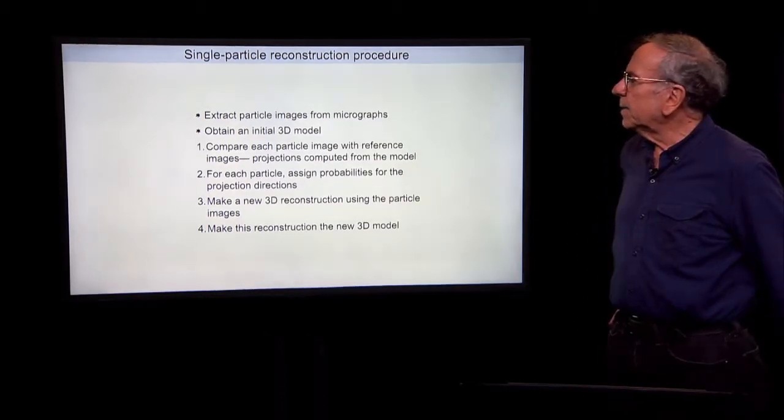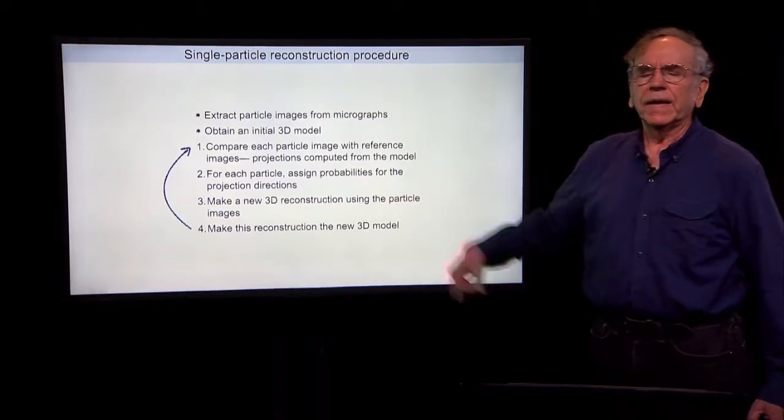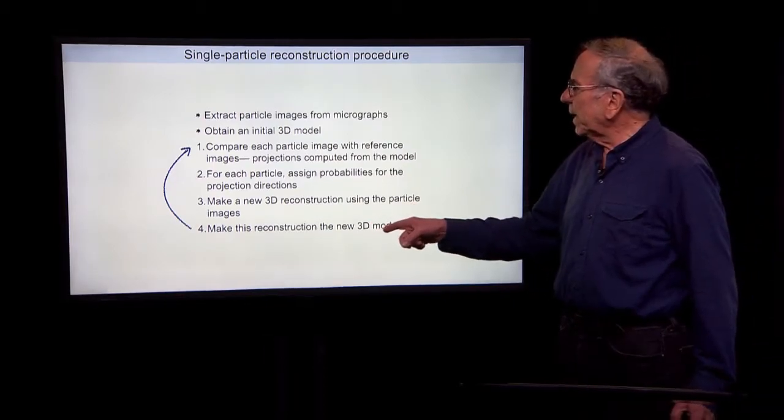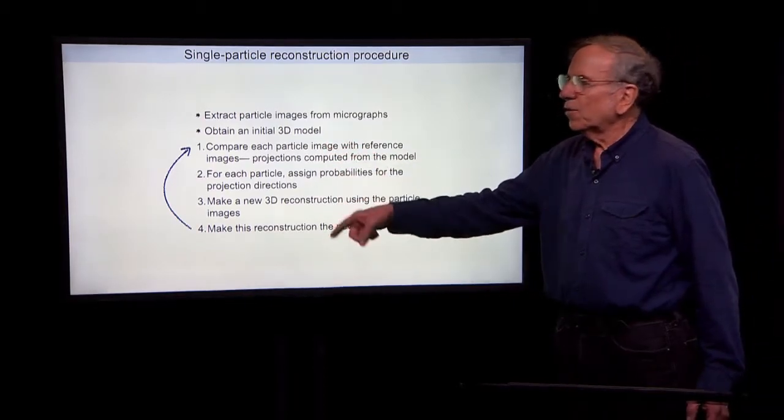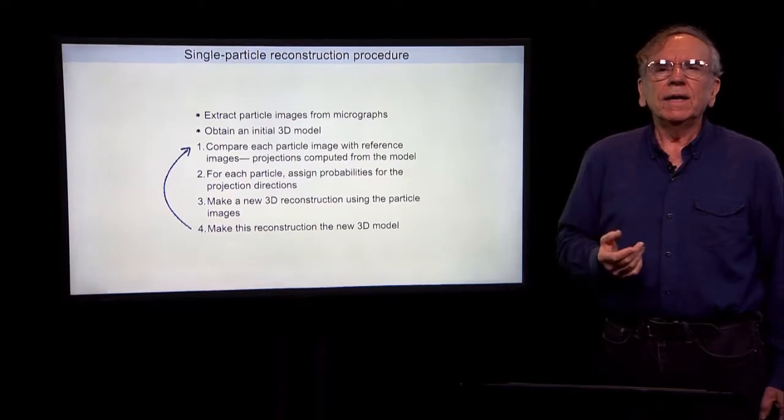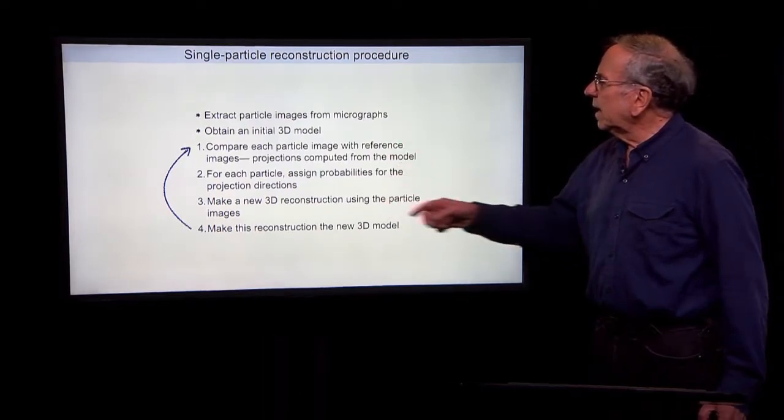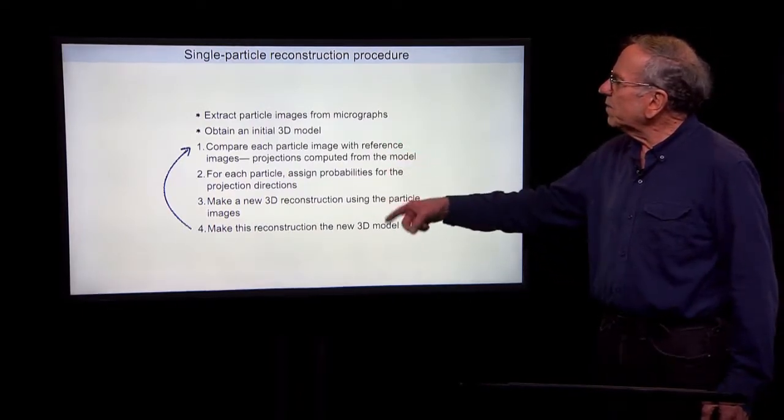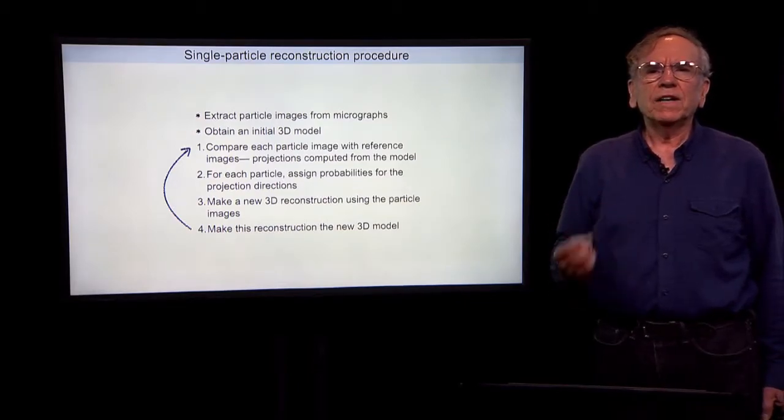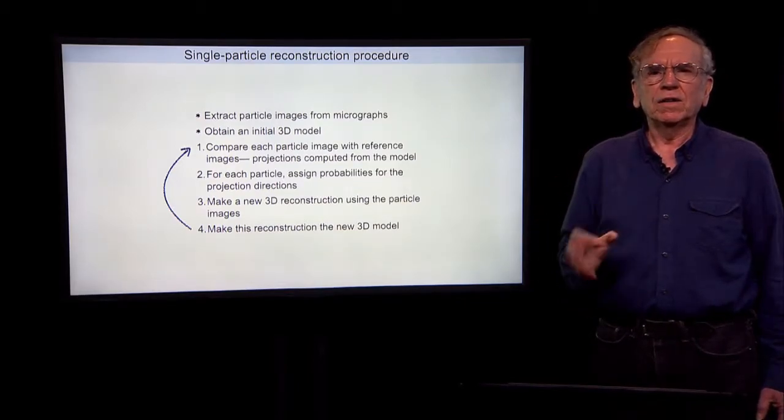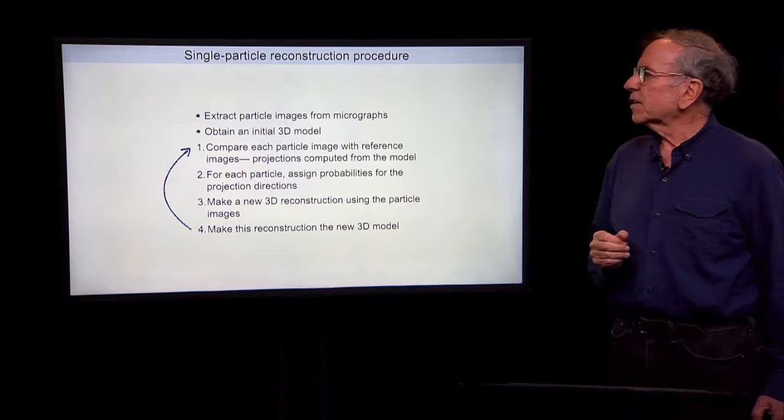And then do the inverse Fourier transform and make this reconstruction the new 3D model. And then we iterate. Now that we have a better three-dimensional model, we can go back through these steps. And under certain conditions, we can be confident that this iterative process will improve the model and hopefully give us the correct structure.